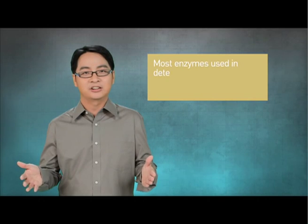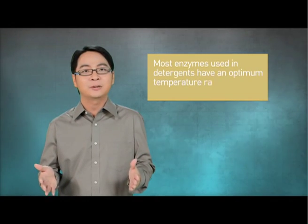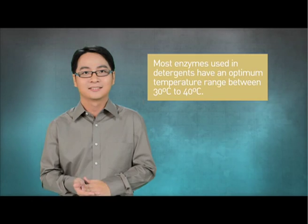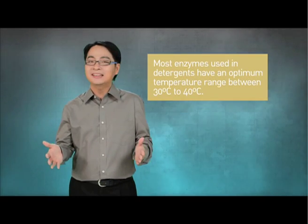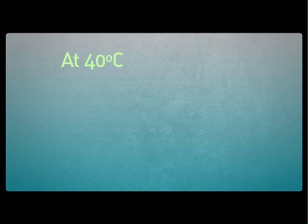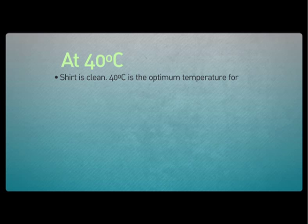Most enzymes in detergents have an optimum temperature range between 30 and 40 degrees Celsius. Therefore, enzymes are most active at removing stains within this temperature range. At 40 degrees Celsius, the shirt is clean. 40 degrees Celsius is the optimum temperature for enzyme activity. Therefore, enzymes are most active to remove the stains.